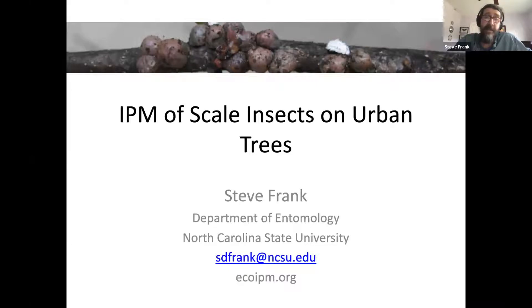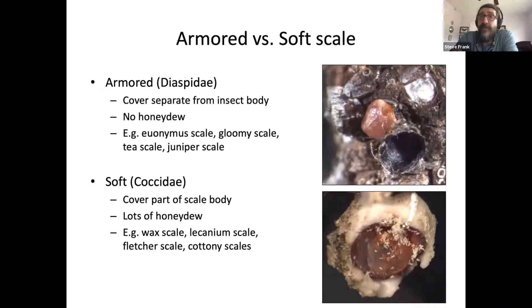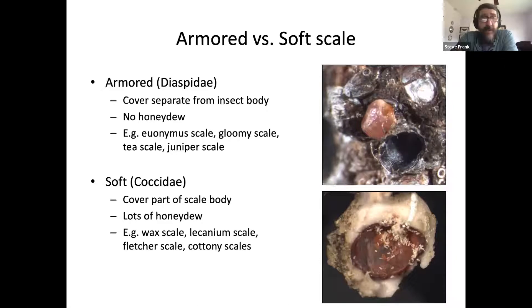One of the first things that I think is critical when working with scale insects is to be able to identify the two main groups of scales: armored scales versus soft scales. There are thousands of scale species and you're never going to know all of them. But if you can distinguish between these two main groups, you'll be one step closer to selecting the correct management solutions.